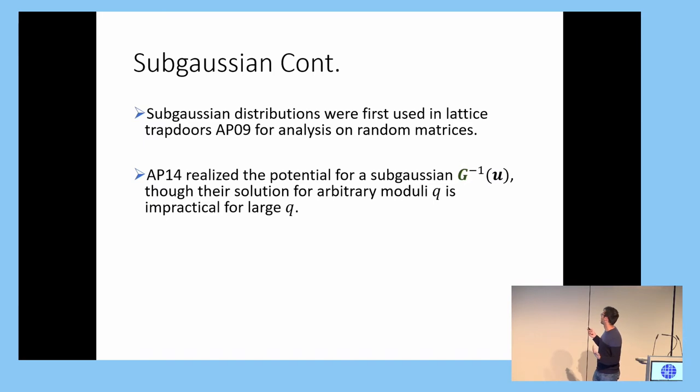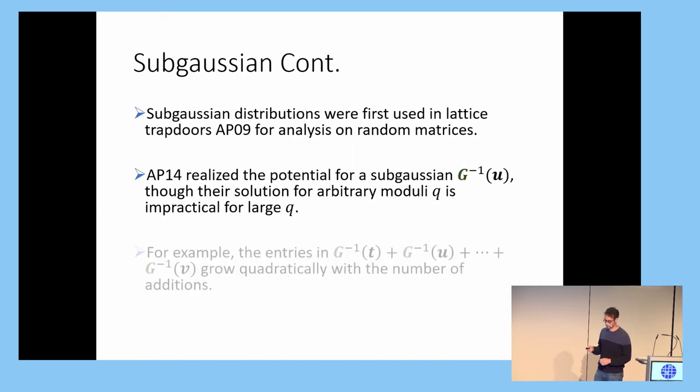And again, they only had efficient algorithms when Q was the power of B. And for arbitrary moduli, they had to rely on generic algorithms. And this isn't ideal because, again, we get to design these gadgets for our efficiency needs. So you'd think there would be either another gadget or another possible algorithm to do this more efficiently.